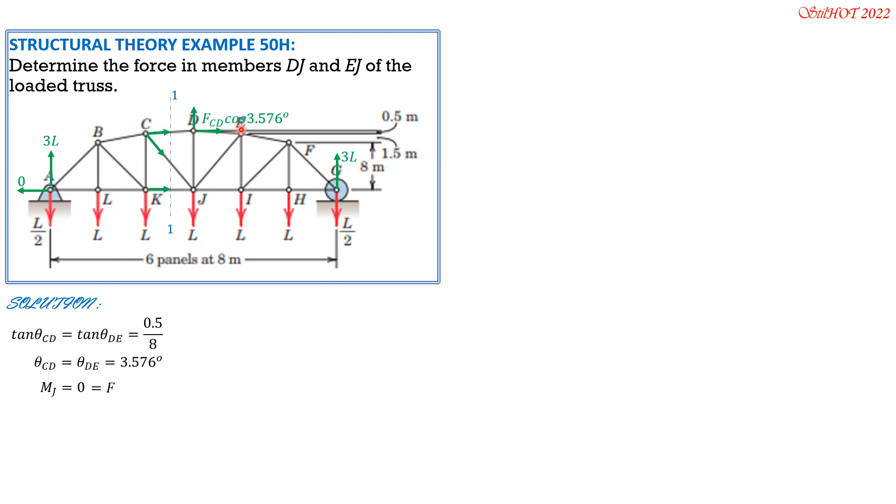So equals FCD cosine 3.576 degrees times 10. This is 10 meters distance length of DJ because 8 plus 1.5 plus 0.5 is 10. Then plus 3L, this 3L here, times quantity 8 plus 8 plus 8, 24. Then minus L times 8. Minus this L times 16. Then minus this L over 2 times 24. So from there, we can solve FCD. It is equal to negative 3.607L.